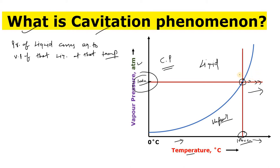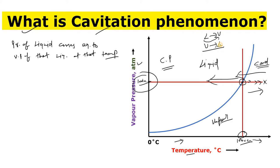Now what happens if we do the reverse process? If you are reducing the temperature, condensation will occur. From that point, the first drop of condensation will occur and your vapor will convert into liquid. So first liquid converts into vapor, then vapor converts back into liquid if we decrease the temperature.